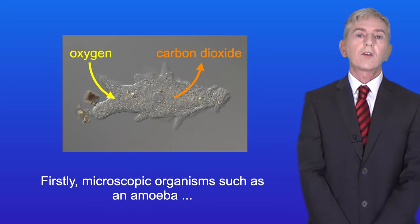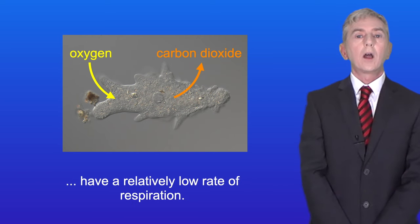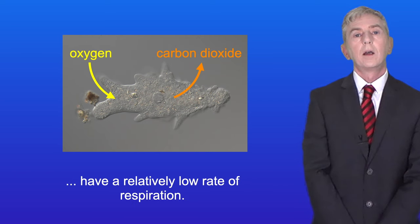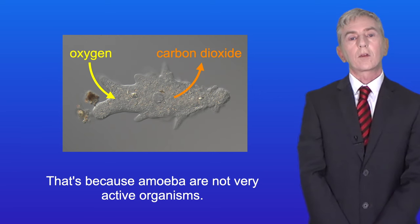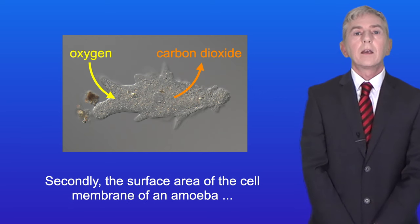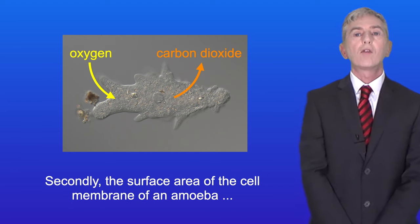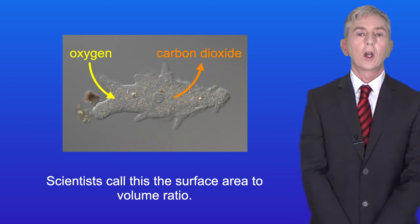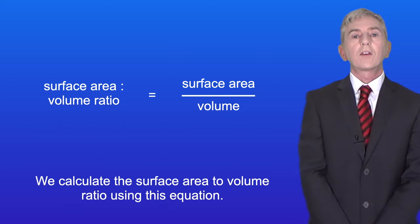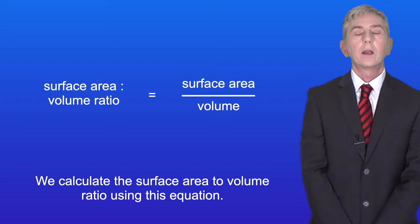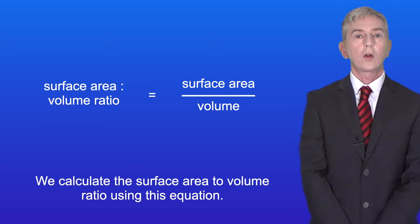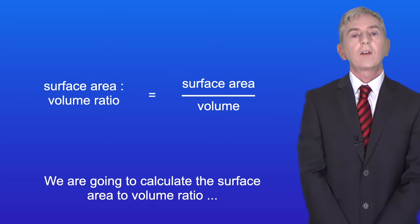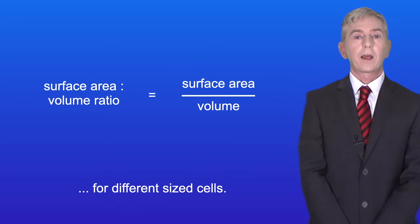Firstly, microscopic organisms such as amoeba have a relatively low rate of respiration because they are not very active. Secondly, the surface area of the cell membrane is relatively large compared to the volume of the cell. Scientists call this the surface area to volume ratio, and we calculate it using this equation: the surface area to volume ratio equals the surface area divided by the volume.